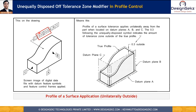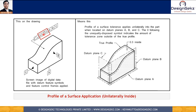The tolerance value after the U modifying symbol shows the outside-the-material or outside-the-true-profile tolerance zone, whereas the 0.3 value shows the total profile of a surface tolerance zone. In this example, the total profile control is 0.3 and the outside profile control is also 0.3, meaning all of the profile tolerance zone is outside the true profile, as shown here with a total tolerance value of 0.3.